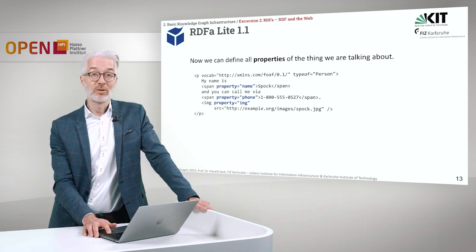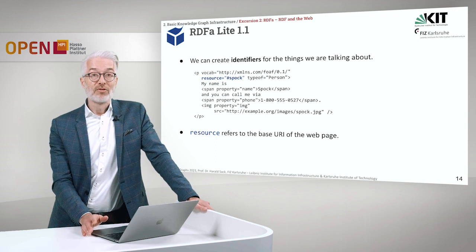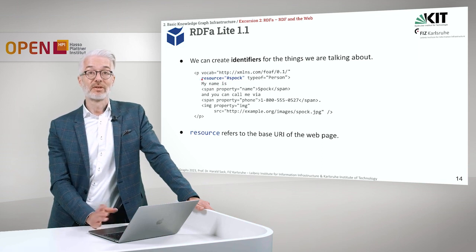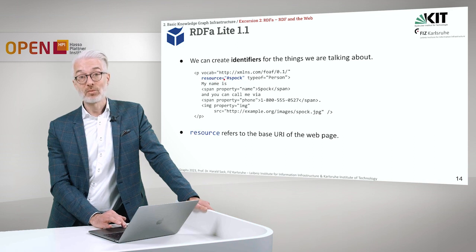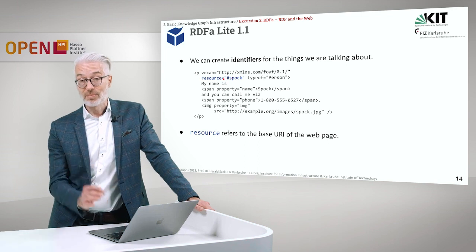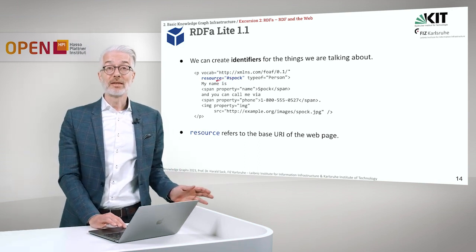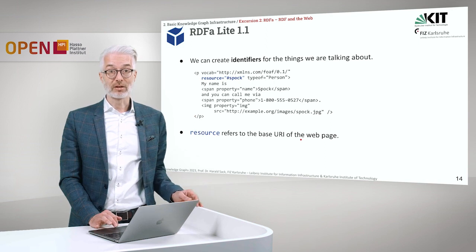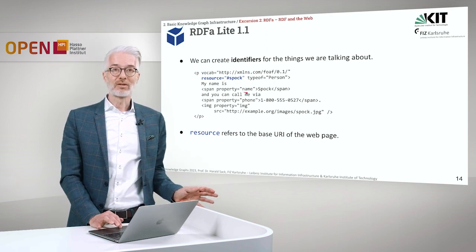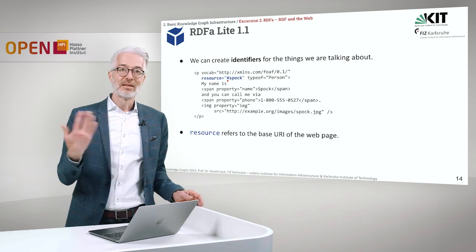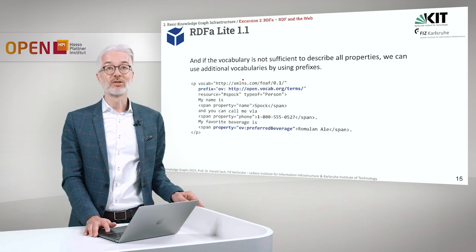Now we have for Spock the name, phone number, and image. We can also create an identifier for the thing we are talking about. We are talking about a FOAF person, and we call this person — this resource — 'Spock'. It is resource hash Spock of type Person. We call it hash Spock because it needs a namespace, and naturally we use the namespace of the HTML document — the base URI of the web page. The entity described with these properties is then denoted by the base URI of the web page with the suffix hash Spock.